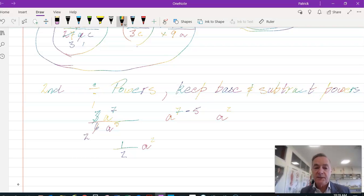That's the second index law, where we are dividing powers. We keep the base if it's the same base. Otherwise, we just cancel out with highest common factors. When we divide powers, we are looking at keeping the base and subtracting the powers. Let's go on and have a look at question 1.